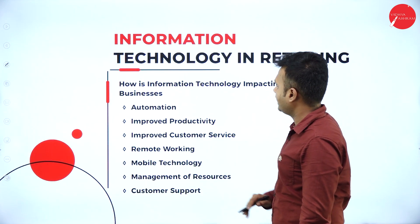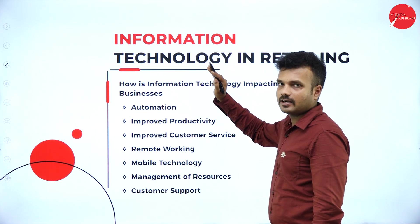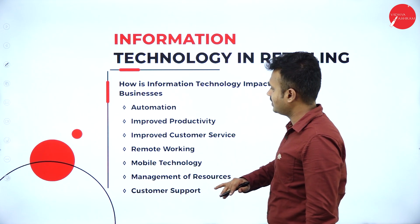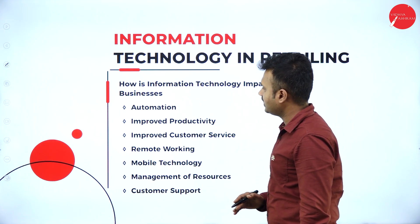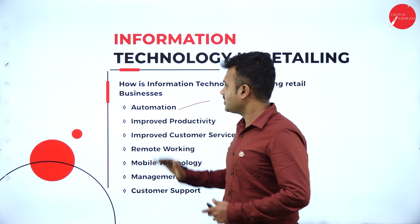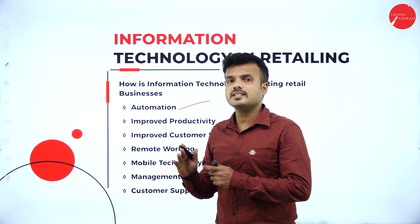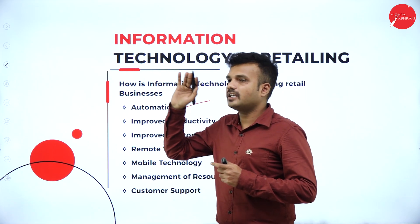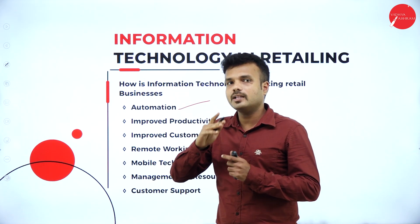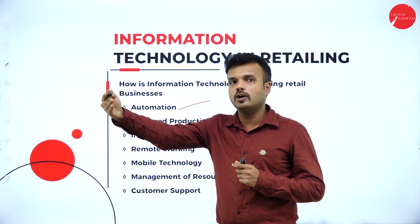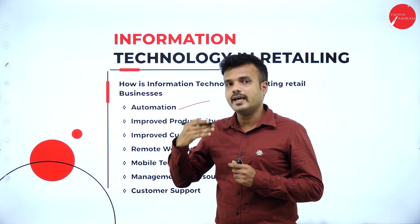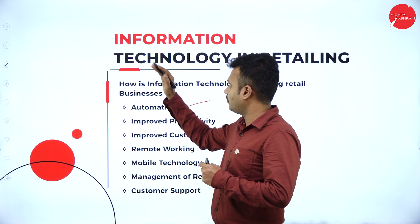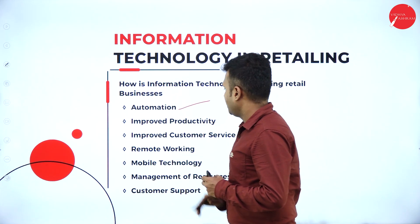Information technology in retailing — the unit is about how information technology is used and how it impacts retail business. The first impact is automation. The business can automate certain processes and techniques, including customer service. Information technology has contributed to making all activities — from placing the order to supply chain management and vendor management — happen automatically.